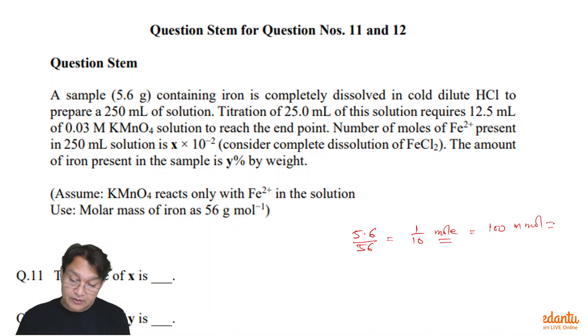Titration of 20 ml of this solution requires 12.5 ml of 0.03, that means 3 upon 100 molarity KMnO4 with the n-factor of 5 to reach the end point.